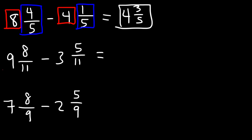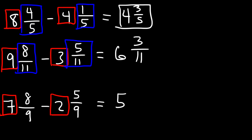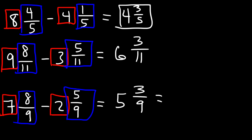For the second example: 9 minus 3 gives us 6, and 8 over 11 minus 5 over 11 is 3 over 11, so the answer is 6 and 3 over 11. For the last one: 7 minus 2 is 5, and 8 over 9 minus 5 over 9 is 3 over 9. We can reduce 3 over 9 by dividing both by 3 to get 1 over 3. So the final answer is 5 and 1 third.